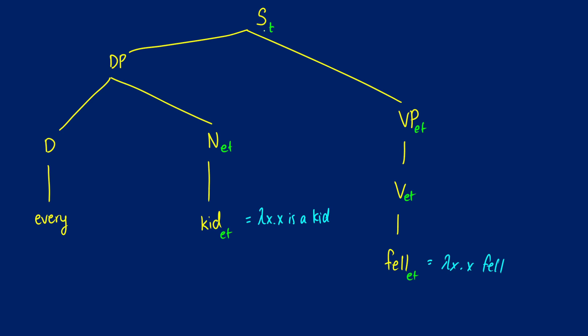We don't have an entity here — it's not just 'Trevor fell'; it's a quantified noun phrase. So the DP is going to have a type similar to our quantified pronouns: ET. How do we get an ET out of a determiner and an ET? Every is acting as our main function here. The first thing it needs to take is an ET, and what it needs to output is an ET. Looking at our translation for 'every' — lambda P, lambda Q, for all X, if PX then QX — we have our ET input, our ET input, and then the final output is a truth value.